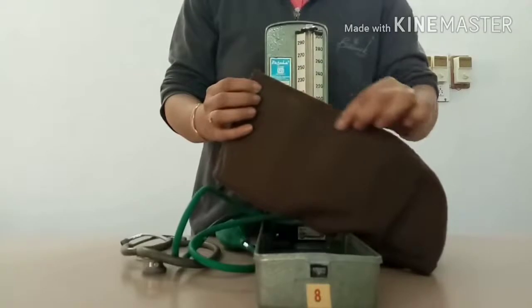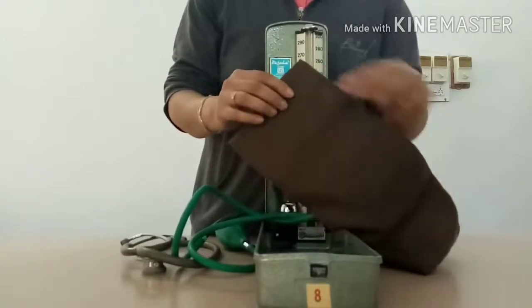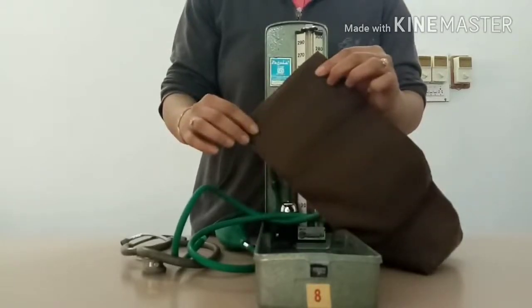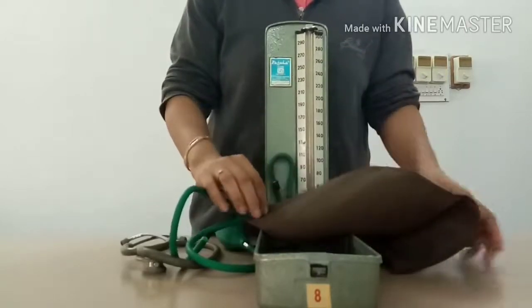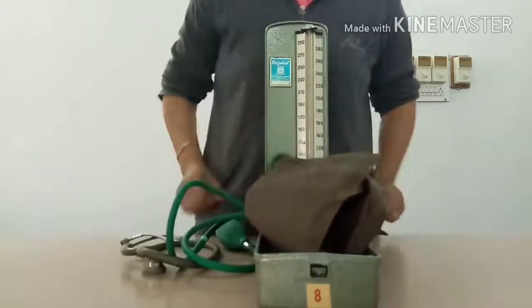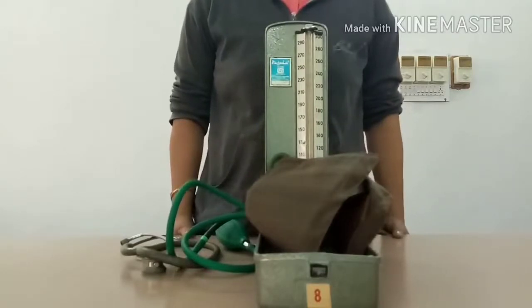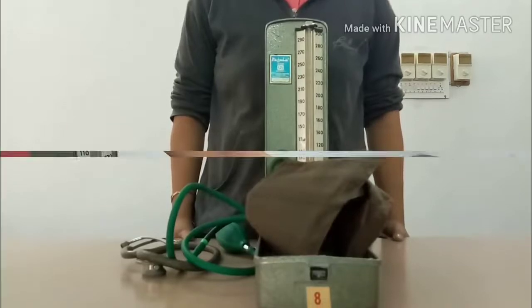Inflatable bag dimensions: length to width ratio is 2 to 1. Therefore, wider cuffs should be used to record blood pressure in obese individuals and in lower limbs, and small cuffs should be used to record blood pressure in children.